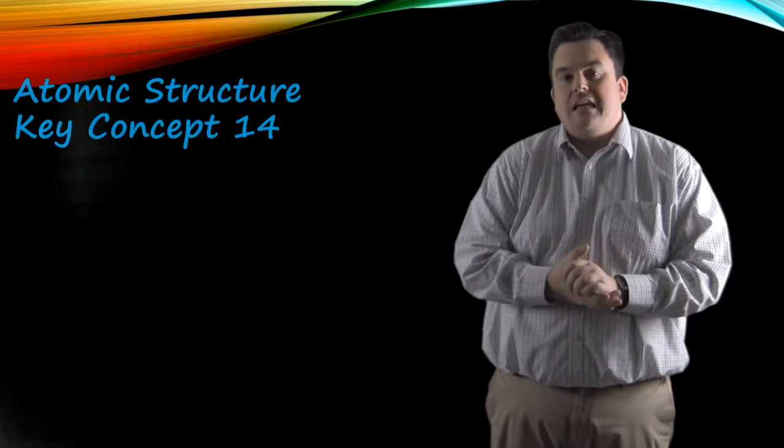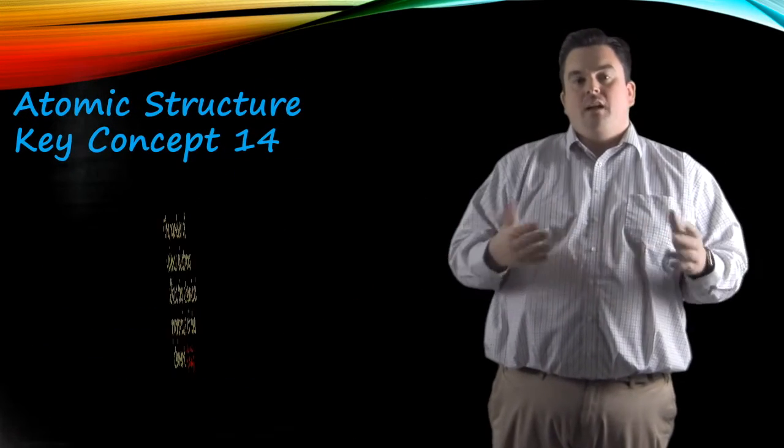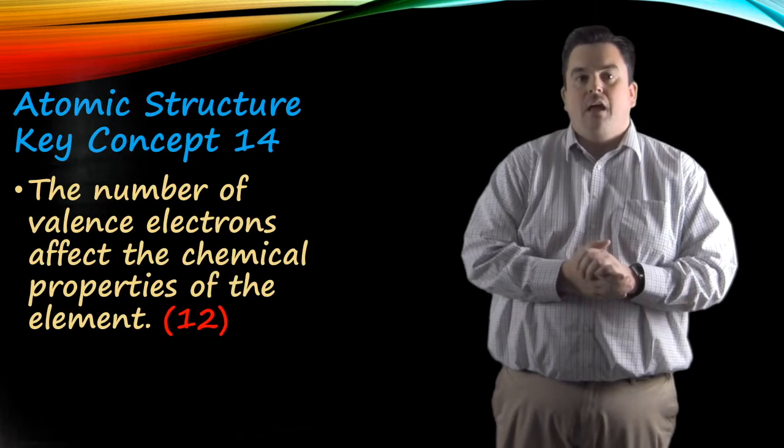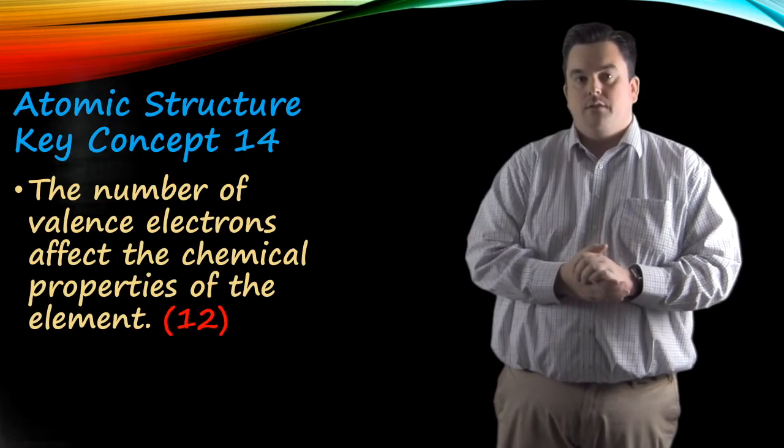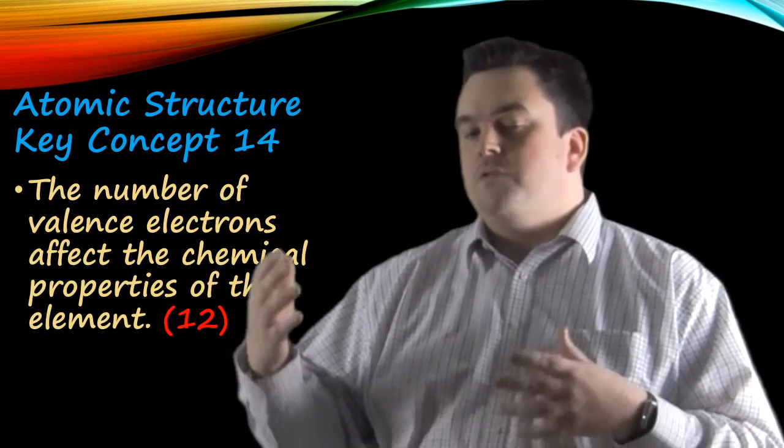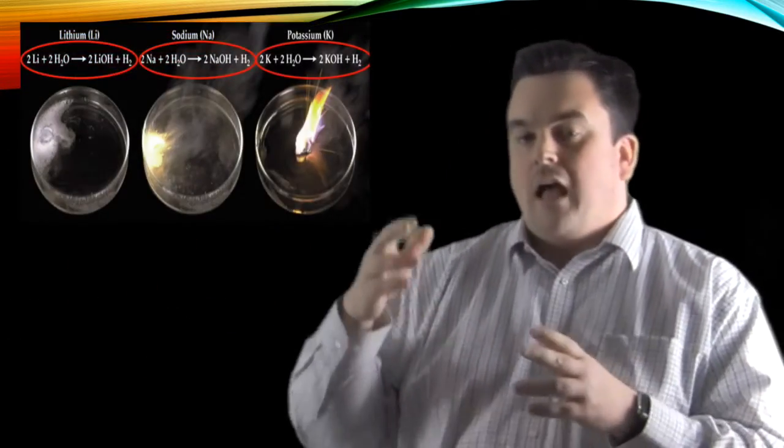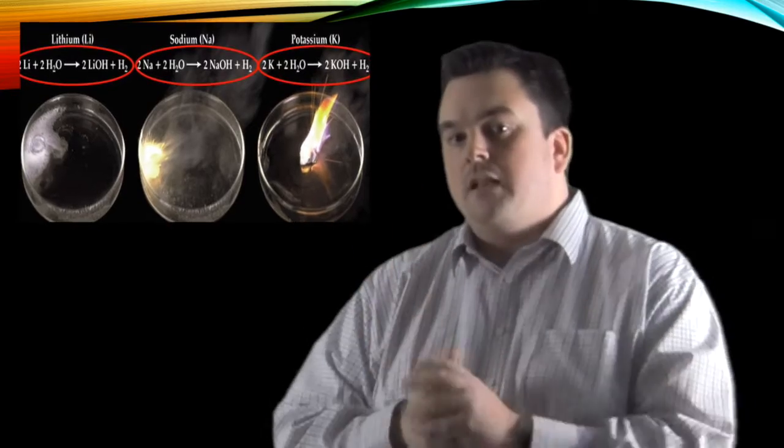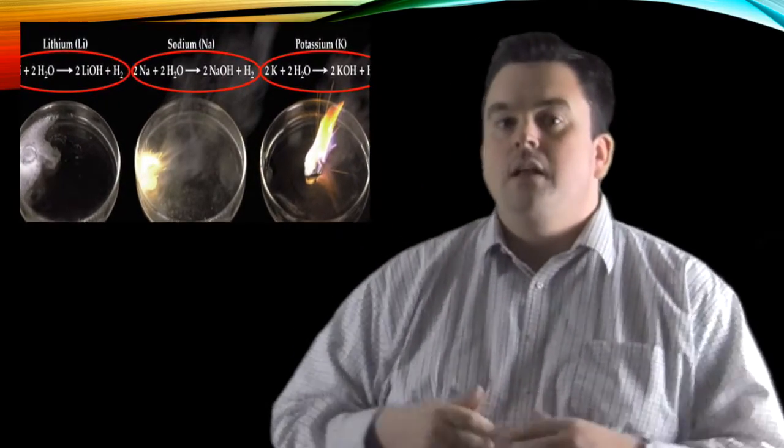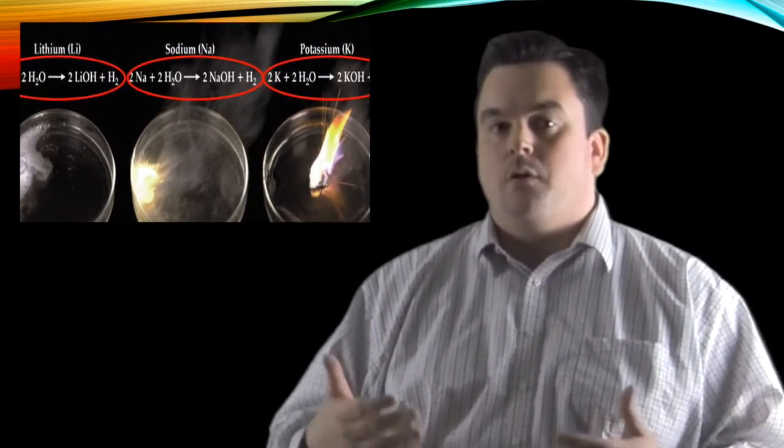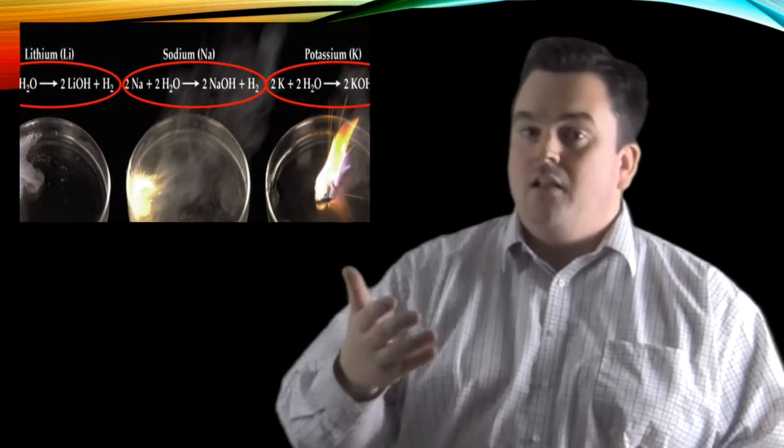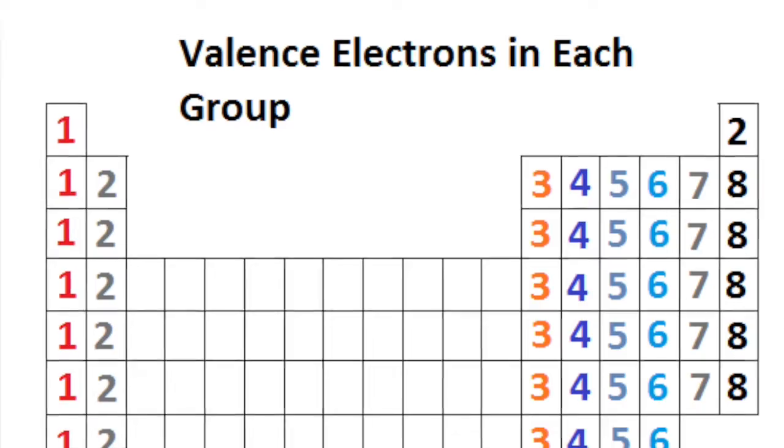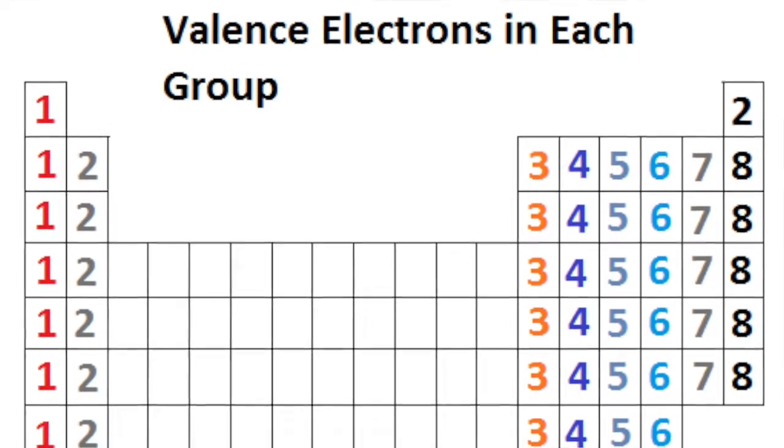Atomic structure, key concept fourteen. The number of valence electrons affect the chemical properties of the element. Now, as Shu said before, those valence electrons are in the outermost shell. And if those outermost shell electrons are the same number of electrons for each of those elements, they are said to have similar chemical properties. Now, those elements that have the same number of outermost electrons are found in the same groups or columns on the periodic table.